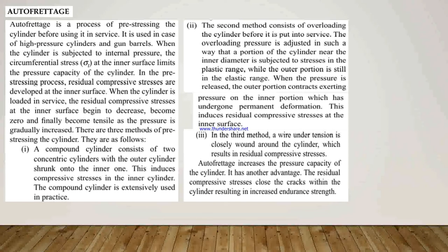In the third method, wire under tension is closely wound around the cylinder, which results in residual compressive stresses. These three methods are used for pre-stressing of the cylinder. Autofrettage increases the pressure capacity of the cylinder and has another advantage: the residual compressive stresses close the cracks within the cylinder, resulting in increased endurance strength.